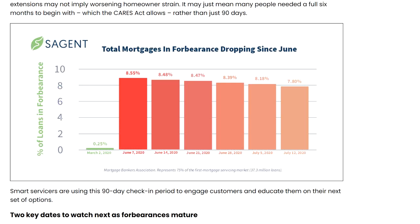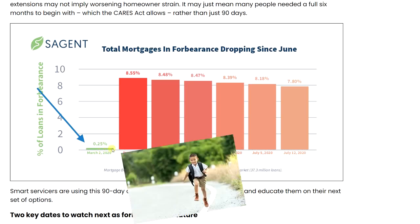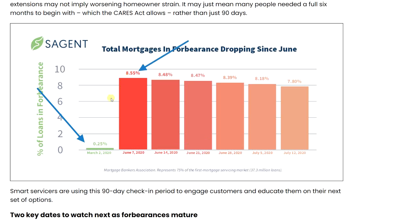Looking at a forbearance chart from HousingWire.com: in March 2020, a quarter percent of mortgages were in forbearance. It then jumps up to 8.5% in June, and they say it's dropping since June — down to 7.8% halfway through July. We were at a quarter percent before — that's a massive increase. How many houses are there in the U.S.? Let me pause to add that up.